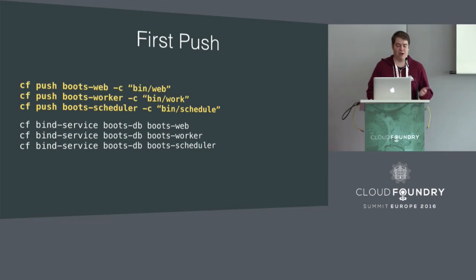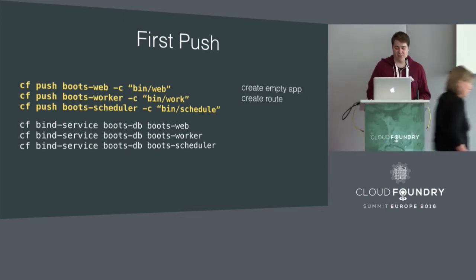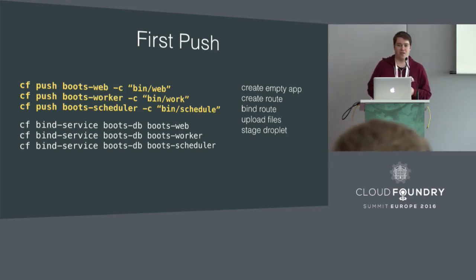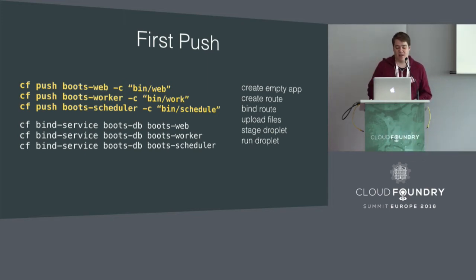During this push process, even though it looks like one command in the CLI, in reality what's happening is: first it creates an empty application, then creates a default route for that application, binds the route to the application, uploads all of the files, stages those files into an executable droplet - that's the part that takes a long time and has a lot of output. And then finally, we run the droplet.